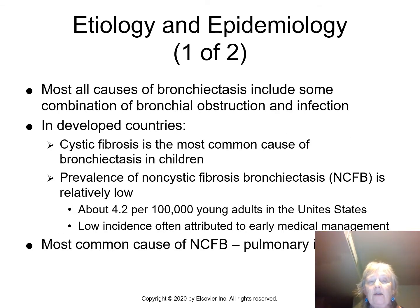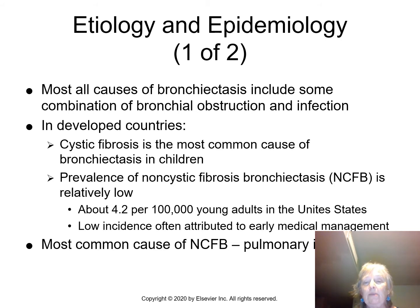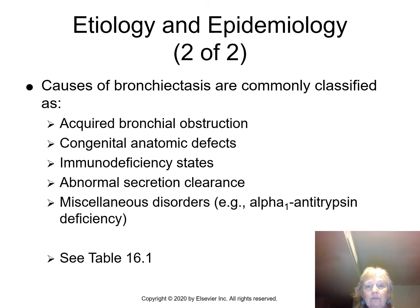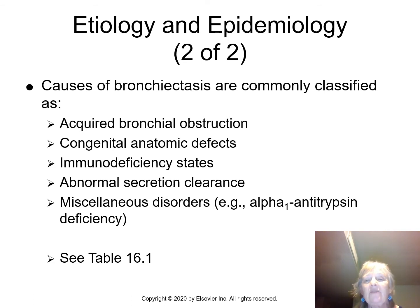Almost all causes involve bronchial obstruction and infection. In developed countries, cystic fibrosis is the most common cause of bronchiectasis in children. The prevalence of non-CF bronchiectasis is very low — only about 4.2 per 100,000 young adults in the United States — because we have better access to healthcare and are able to treat these infections much more effectively.